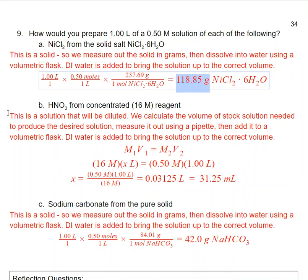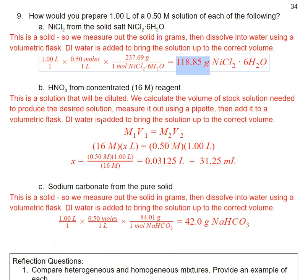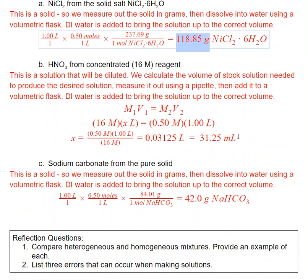In B, we have a solution that needs to be diluted. I need to calculate the volume of that stock solution to produce my desired solution. I'm going to use M1V1 equals M2V2. I solve and get this number of milliliters. I can measure this out using a pipette and then add it to a volumetric flask and bring the solution up to volume with distilled water.